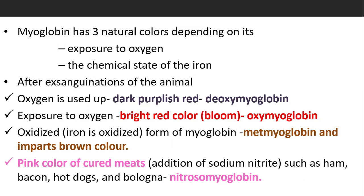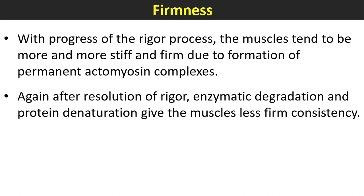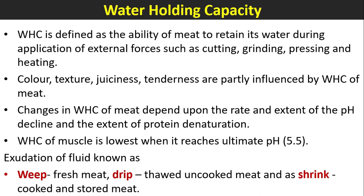The pink color of cured meats results from the addition of sodium nitrate, forming nitrosomyoglobin — found in products such as ham, bacon, hot dogs, and bologna. Firmness: With progress of the rigor process, muscles tend to become more stiff and firm due to the formation of permanent actomyosin complexes.